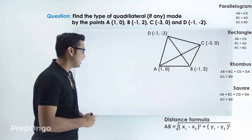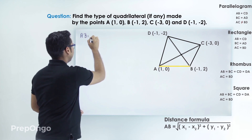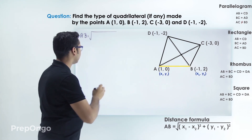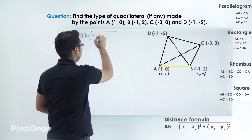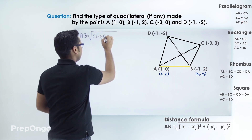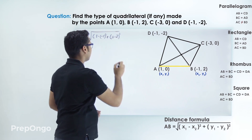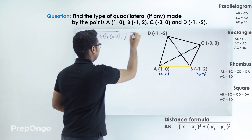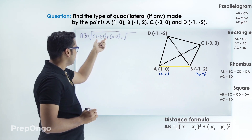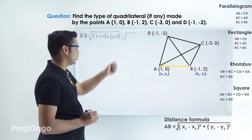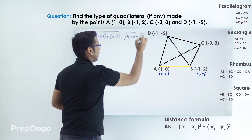First, we find AB using the distance formula: AB equals the square root of (x1 minus x2) squared plus (y1 minus y2) squared. Putting in the values, this will be (1 minus minus 1) squared plus (0 minus 2) squared, which is (2) squared plus (minus 2) squared, giving us 4 plus 4, so AB equals root 8.